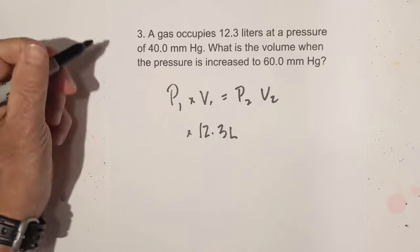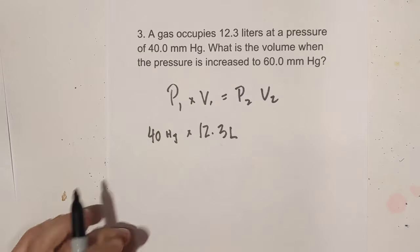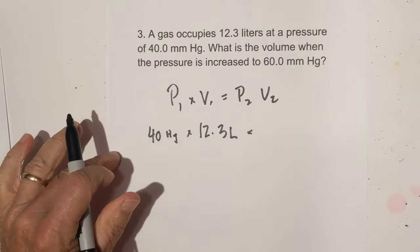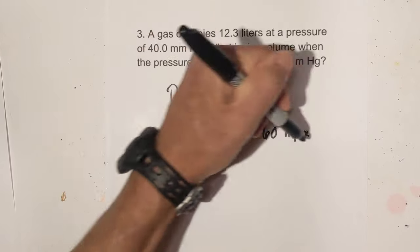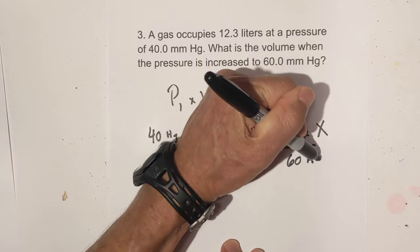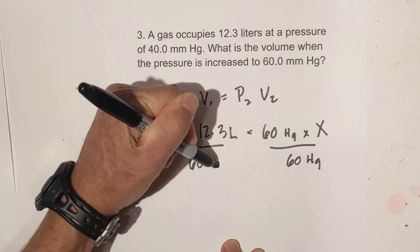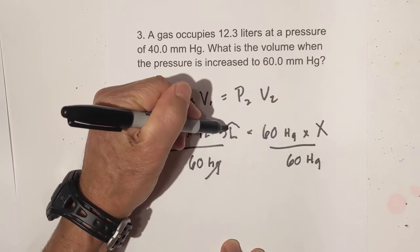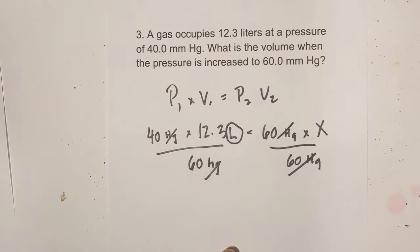You have 12.3 liters, you have a pressure of 40, and I'm just going to put Hg for mercury, and that is equal to, you have a pressure of 60, and you are trying to find what the volume is. So now we divide each side by 60. Units cancel. You are left with liters. These cancel out. I take 40 times 12.3, and that equals 492 over 60.